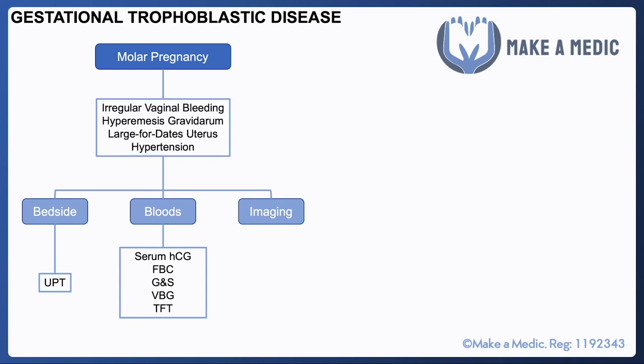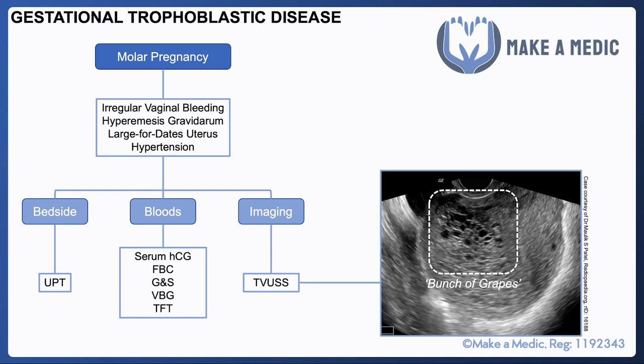The beta-HCG produced in excess by the molar pregnancy can actually have an effect on the thyroid gland as well, so patients may present with features of hyperthyroidism. Imaging-wise, a transvaginal ultrasound scan should be arranged, and the classical description of the picture that you see is a 'bunch of grapes' appearance.